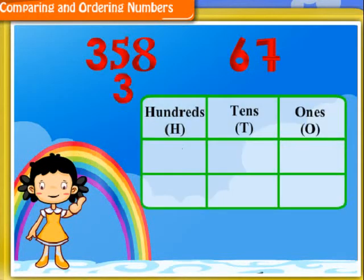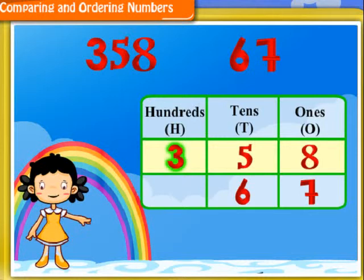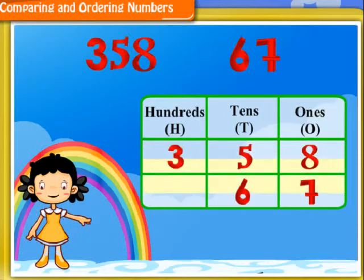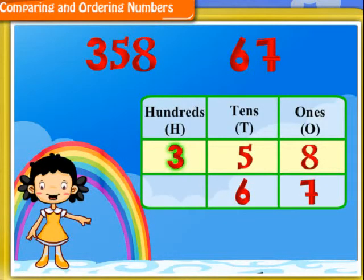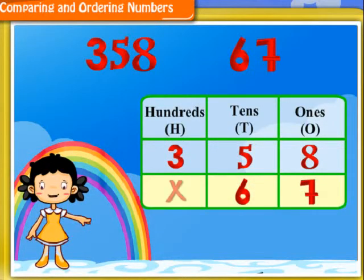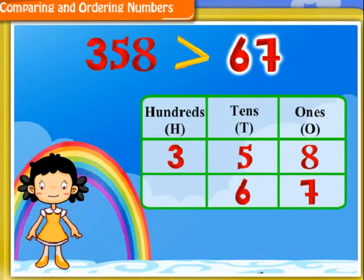Here it is. I can observe that this number has a digit 3 under the hundreds column, whereas this number has no digit in this column. So 358 has three hundreds, whereas 67 has no hundreds. Therefore, 358 is greater than 67.